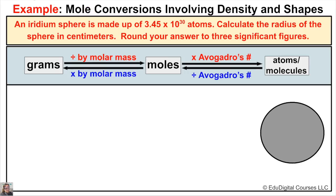In this example it says an iridium sphere is made up of 3.45 times 10 to the 30th atoms. We need to calculate the radius of this sphere in centimeters and then we need to round our answer to three significant figures. So if we read this question carefully, we have a sphere and what we know about this sphere is that it's made of iridium.